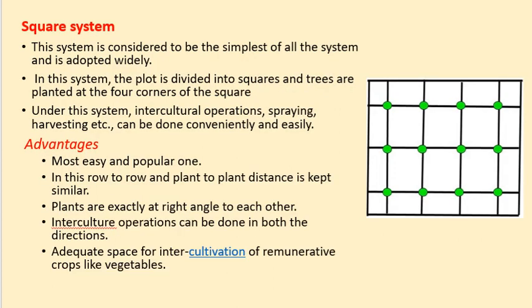First is the square system of plantation. This system is considered to be the simplest of all systems and is adopted widely. In this system, the plot is divided into squares and trees are planted at the four corners of the square. Intercultural operations, spraying, harvesting, etc. can be done conveniently and easily. Advantages: it is the most easy and popular system; row-to-row and plant-to-plant distance is kept similar; plants are exactly at right angles to each other; intercultural operations can be done in both directions; and adequate space for intercultivation and remunerative crops like vegetables can be taken.